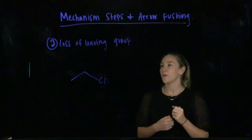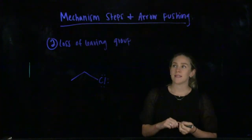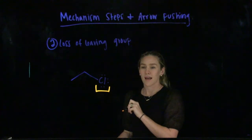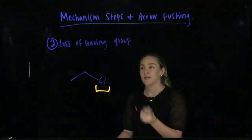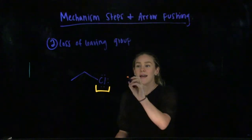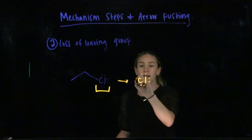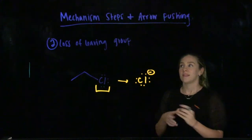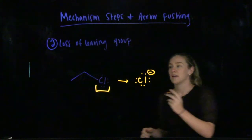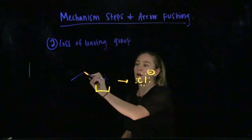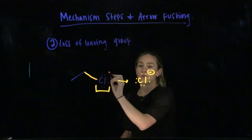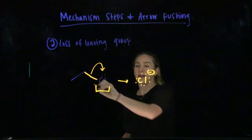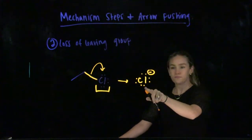In the next mechanism step, we have the loss of a leaving group. The leaving group in a molecule is something like chlorine, which is very electronegative and can exist happily as a chloride ion. This mechanism step shows the movement of electrons from the leaving group bond — the leaving group takes those electrons with it. You draw the arrow from the bond to the leaving group, releasing it from the molecule and giving it two more electrons.